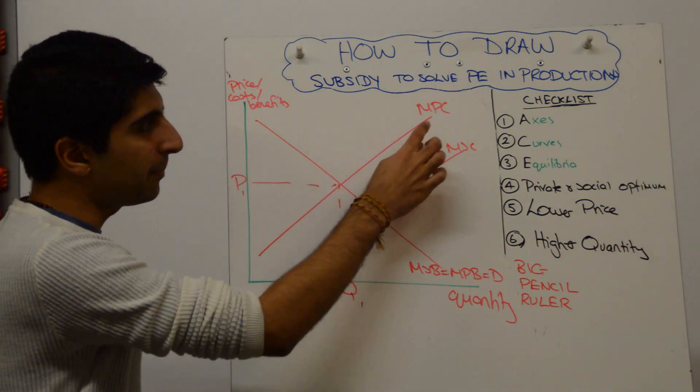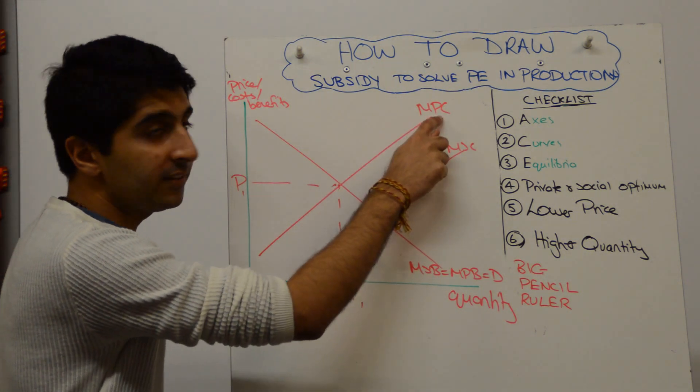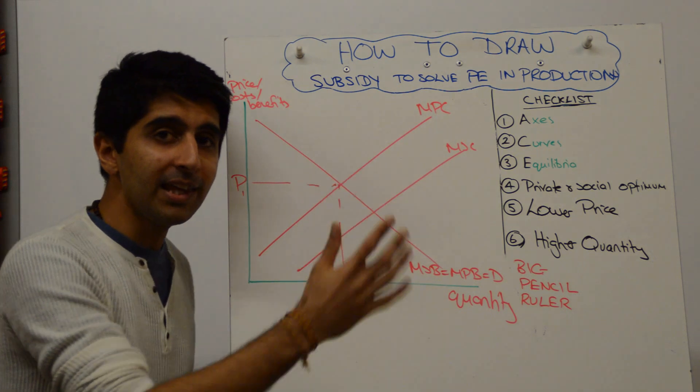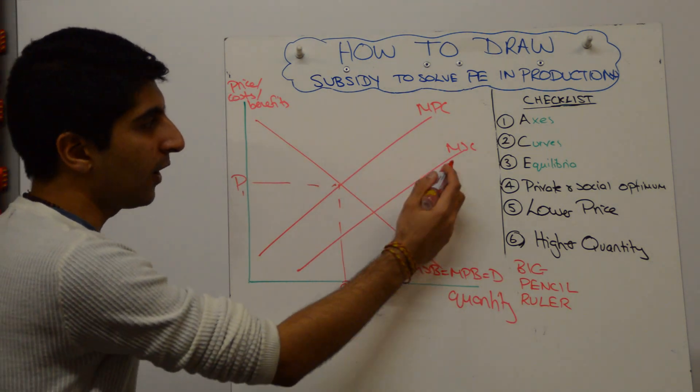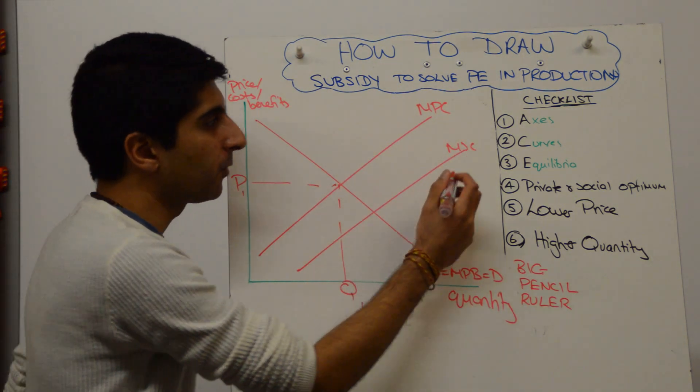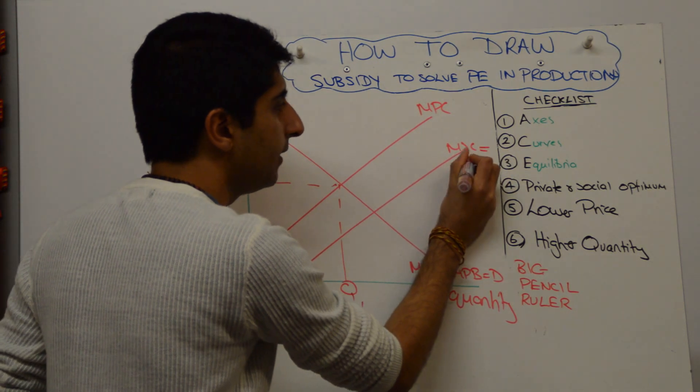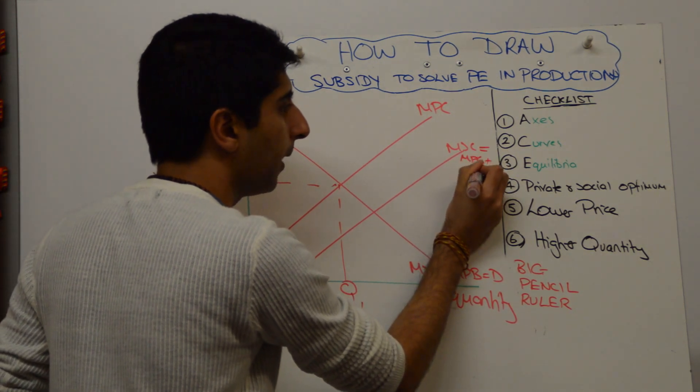So for that to happen, the MPC curve is going to shift downwards to equal the MSC. So what you need to do is to add on MSC, which equals MPC plus sub.